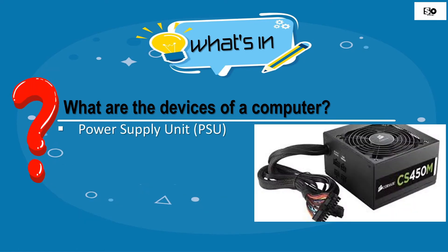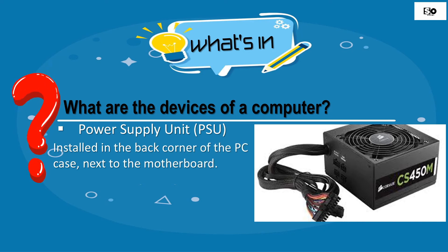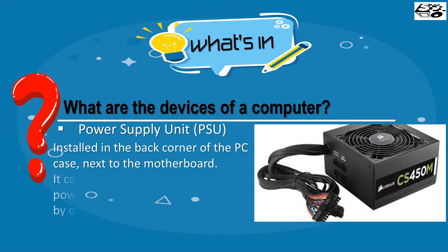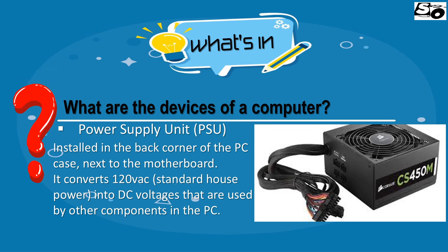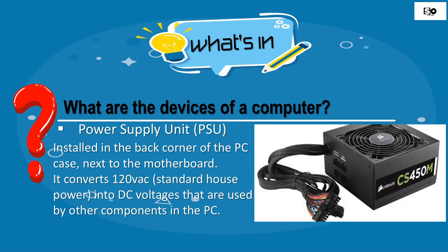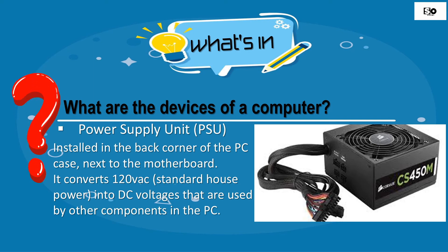Power Supply Unit — installed in the back corner of the PC case next to the motherboard. It converts 120V AC standard house power into DC voltage that is used by other components in the PC.